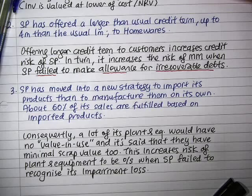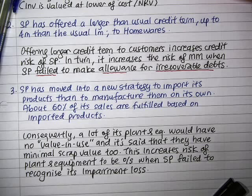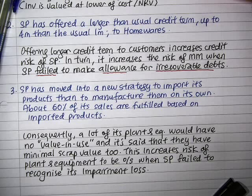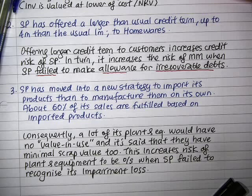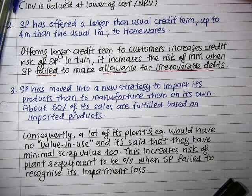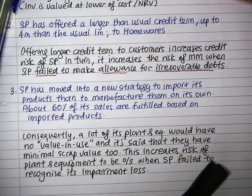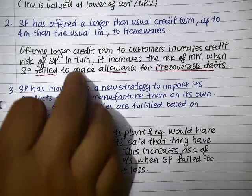Risk five: The finance director has commenced litigation against SP for unfair dismissal, and directors have decided to ignore it in the financial statements. Estimating the outcome of litigation is a matter of high estimation uncertainty, and the accounting treatment is wholly dependent on the estimate of that outcome. There is high risk that an unreasonable estimate leads to the litigation being treated inappropriately in the financial statements. That's five points — enough for part A.